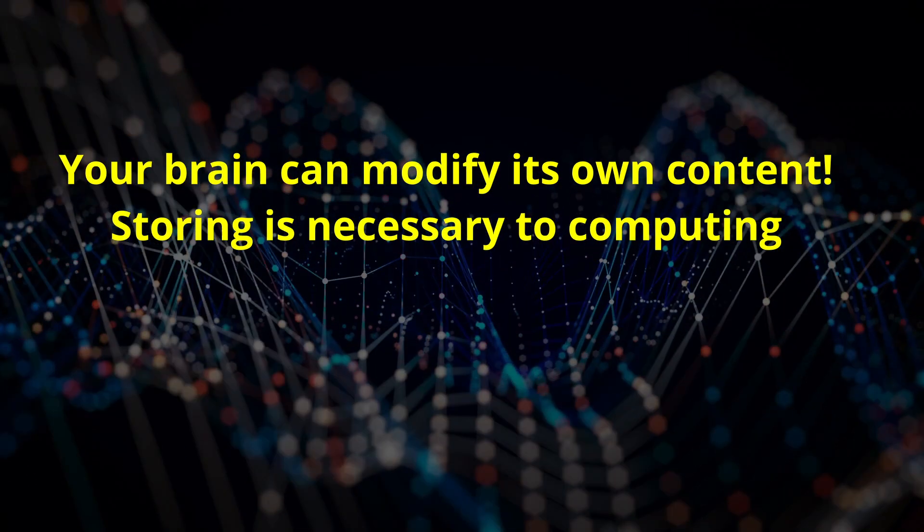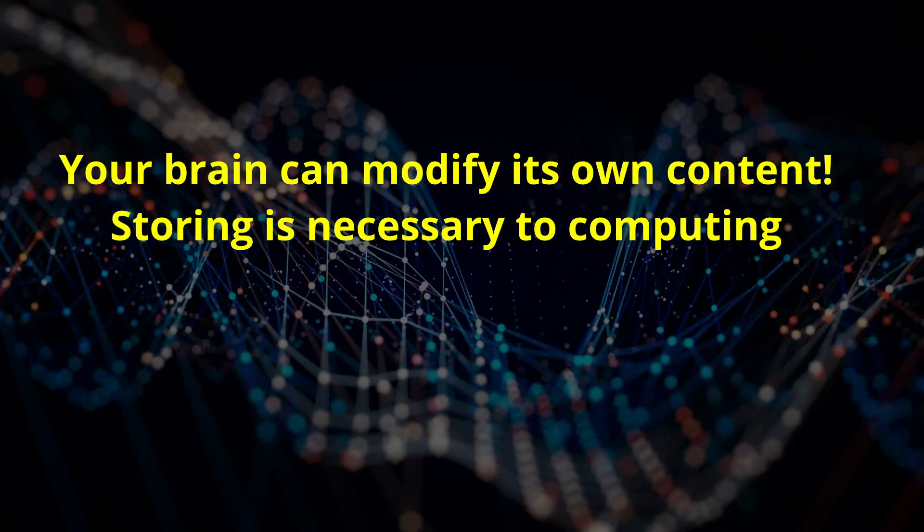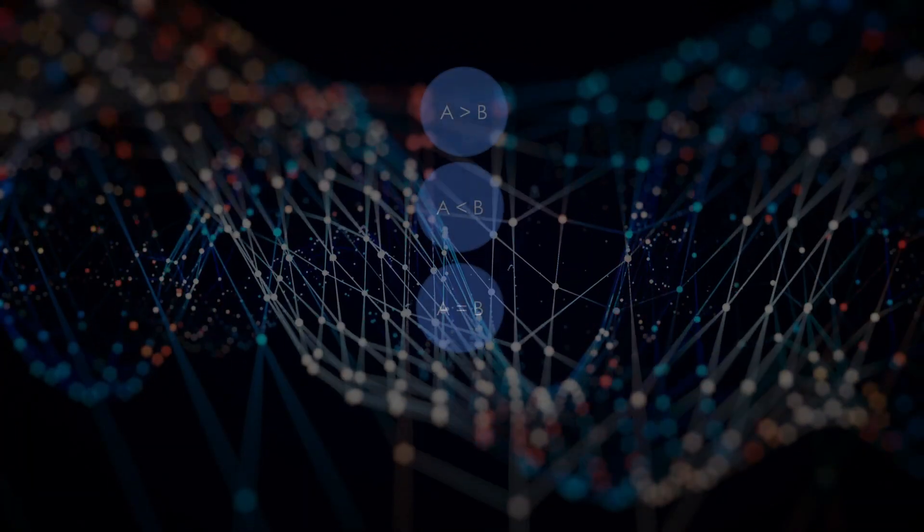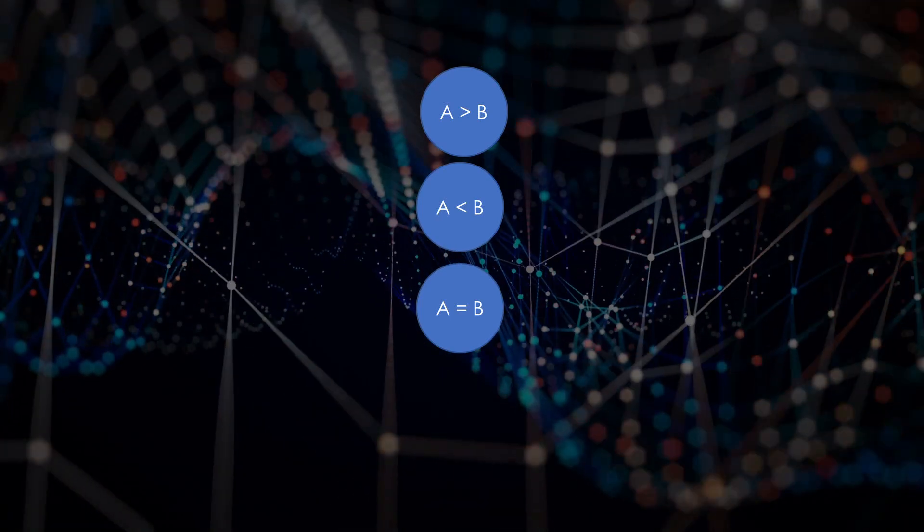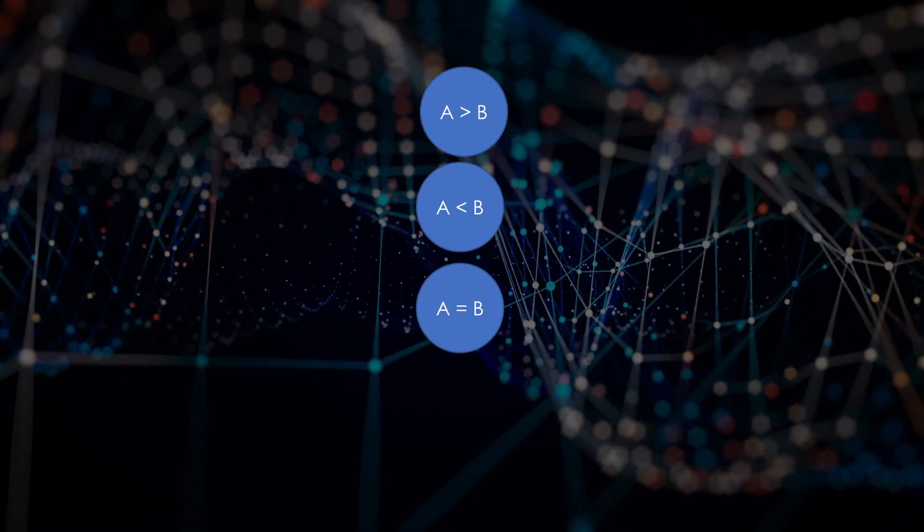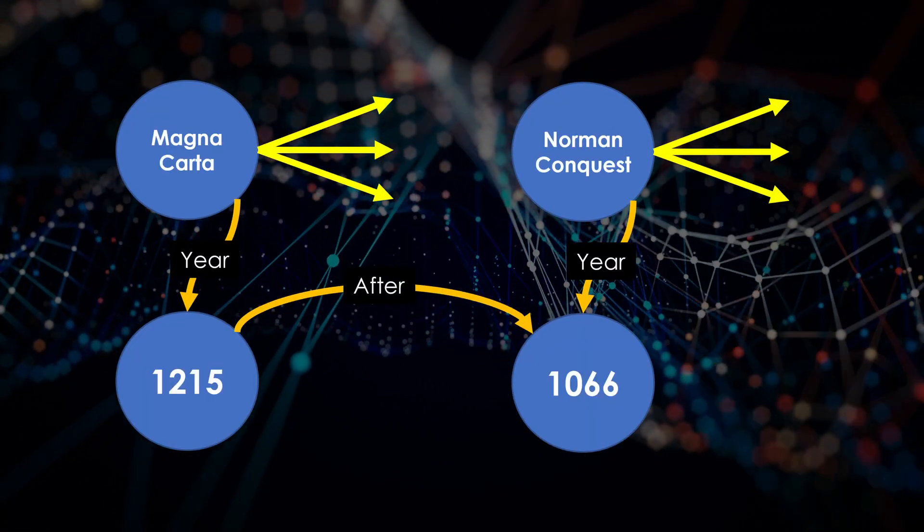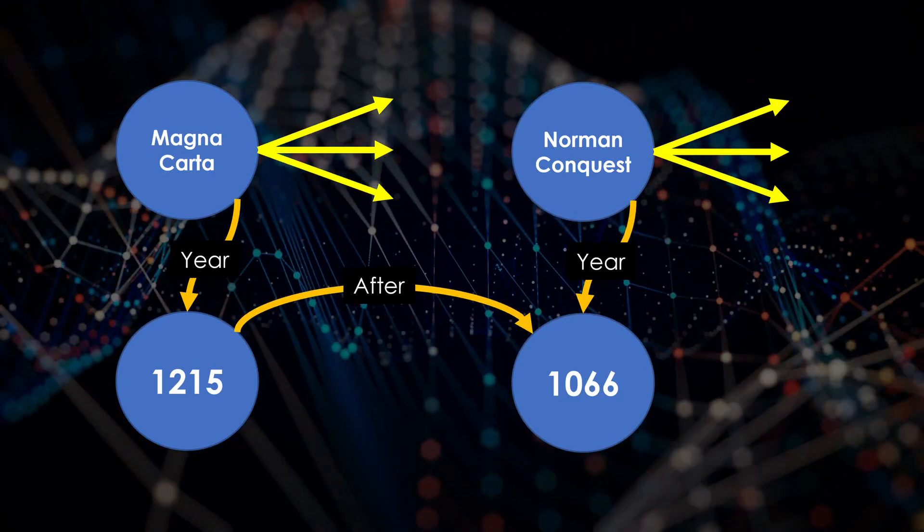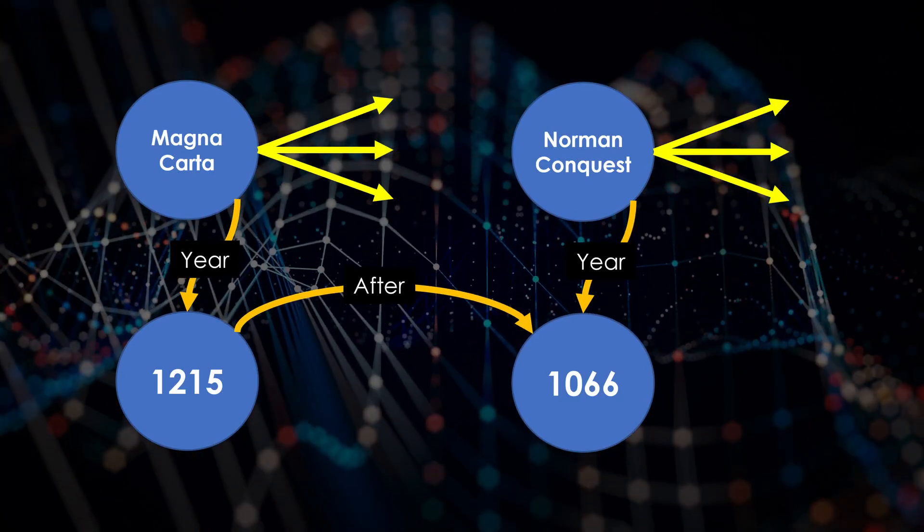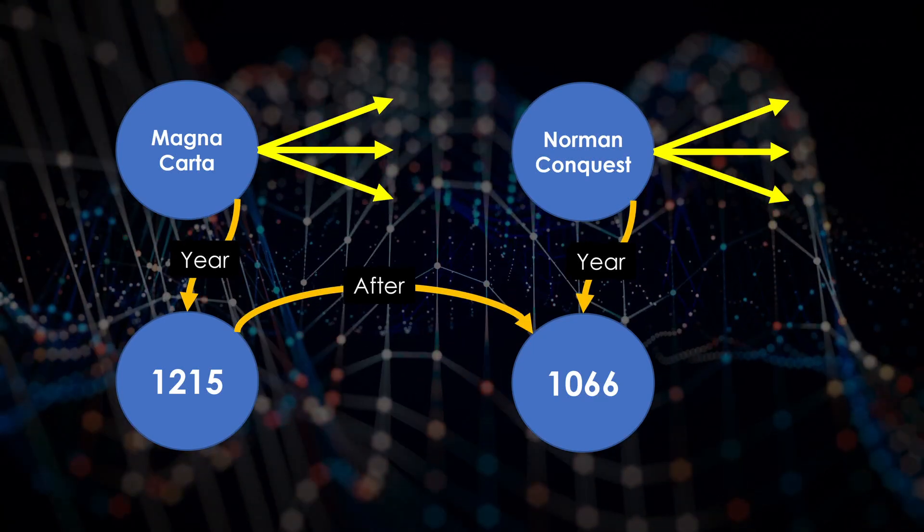In this algorithm, there are only three possible return values. A equals B, A is less than B, or B is less than A. So your brain can add a relationship between the nodes representing the two numbers indicating which came first, or perhaps that they occurred at the same time.